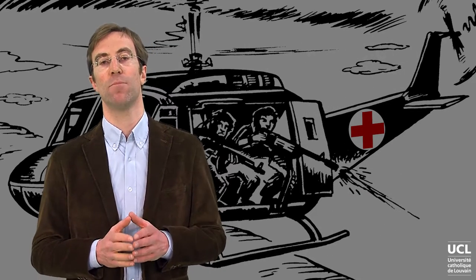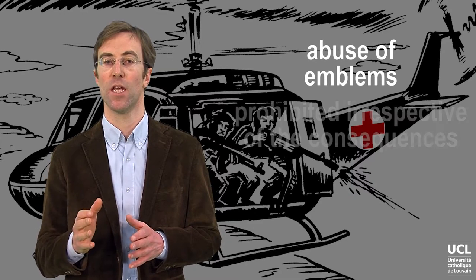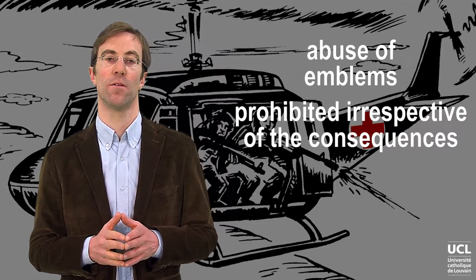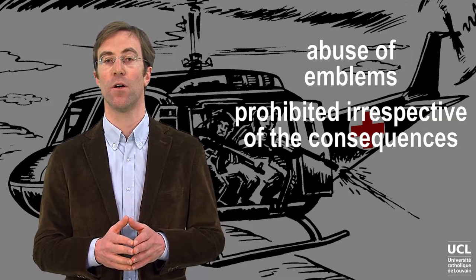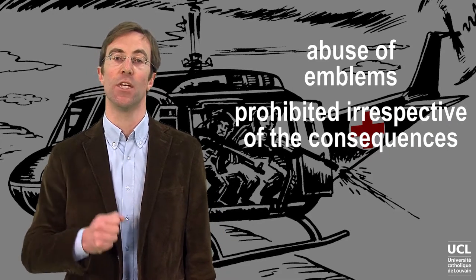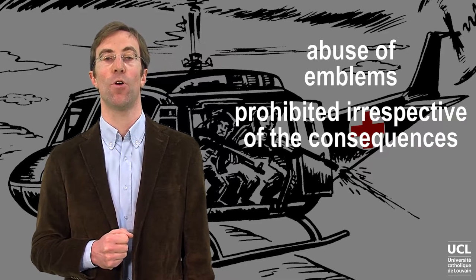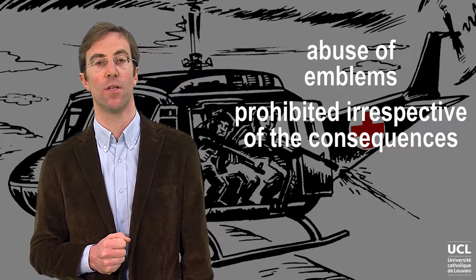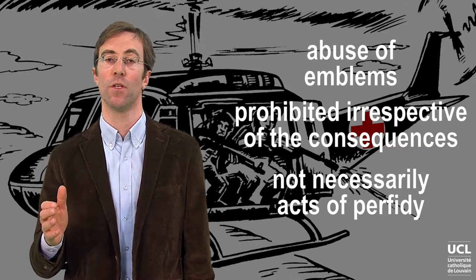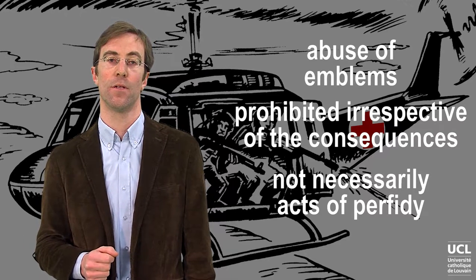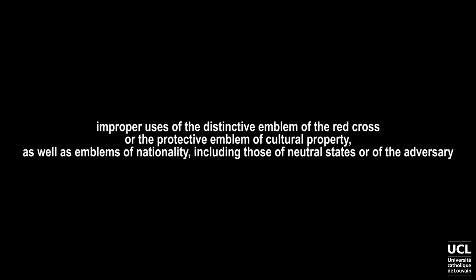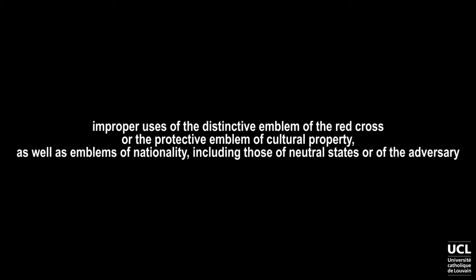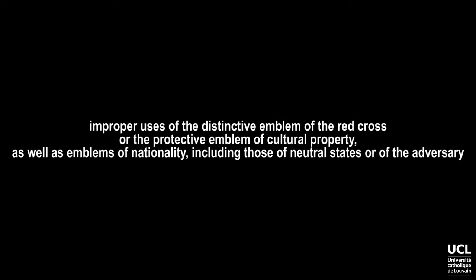The use of recognised emblems for improper purposes is prohibited, irrespective of the consequences. Belligerents are prohibited from using emblems, insignia or uniforms of neutral parties, or of the adversary while engaging in attacks or in order to shield, favour, protect or impede military operations. These acts alone would not necessarily amount to acts of perfidy. Examples of this practice include improper uses of the distinctive emblem of the Red Cross, the protective emblem of cultural property, as well as emblems of nationality, including those of neutral states or of the adversary.